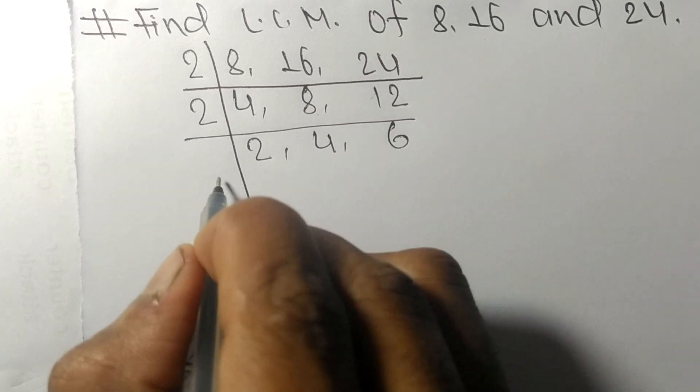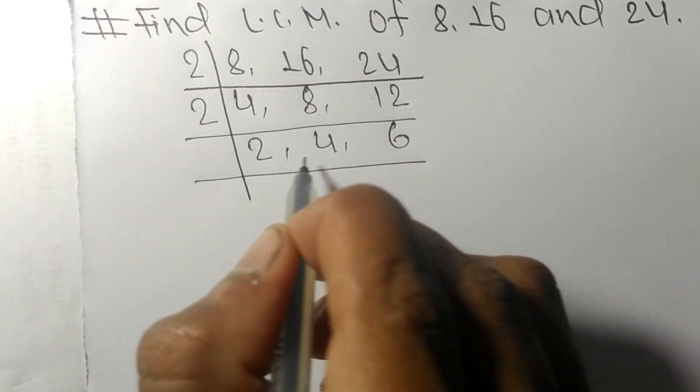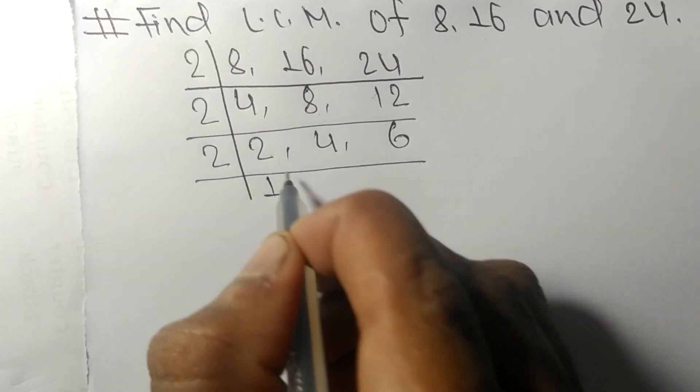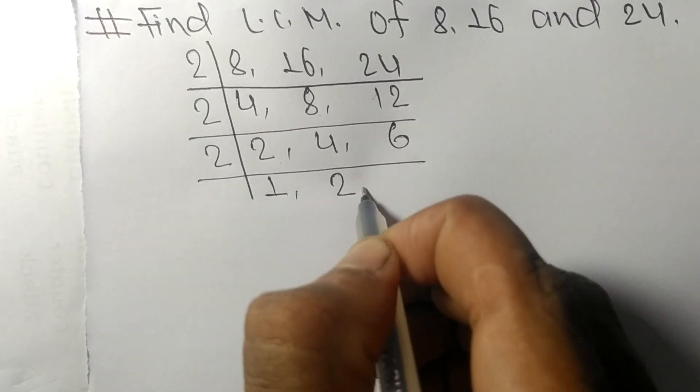Again it is divisible by 2. 2 times 1 means 2, 2 times 2 means 4, 2 times 3 means 6.